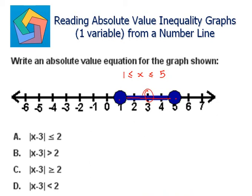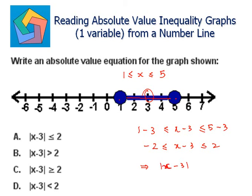So let's subtract 3: 1 minus 3 less than or equal to x minus 3 less than or equal to 5 minus 3. This gives negative 2 less than or equal to x minus 3 less than or equal to 2. This implies the absolute value of x minus 3 is less than or equal to 2, which is the answer.